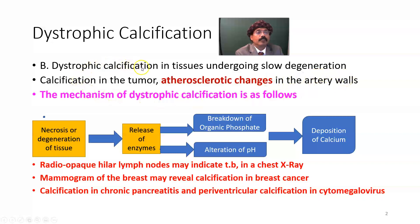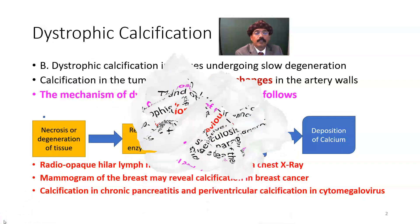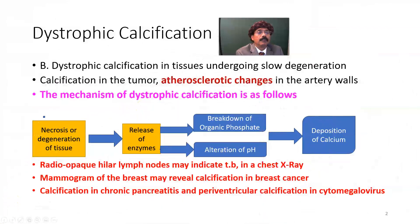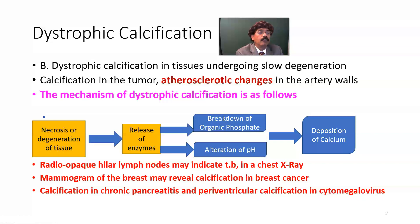In the artery wall there will be dystrophic calcification with slow degeneration. The mechanism of dystrophic calcification — for both necrotic tissue and tissue undergoing slow degeneration — is: necrosis or degeneration of tissue leads to release of enzymes, breakdown of organic phosphate, alteration of pH, and deposition of calcium.